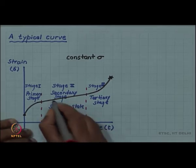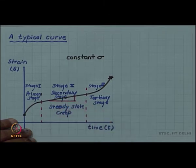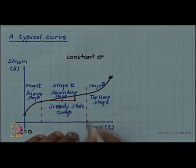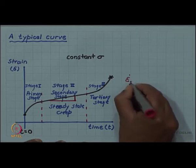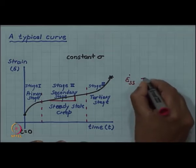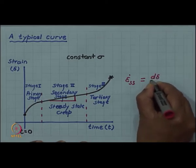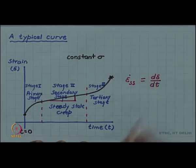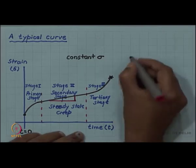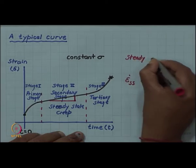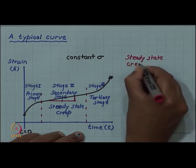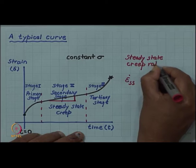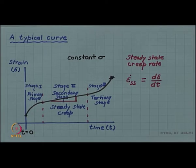This constant strain rate is important in the design of creep design or creep life of material and this is called the steady state strain rate, which is the slope of the curve in the steady state regime. So, this is a typical creep curve.